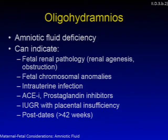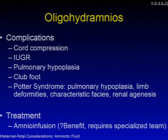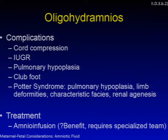Oligohydramnios is an amniotic fluid deficiency that can indicate fetal renal pathology such as renal agenesis or obstruction, fetal chromosomal abnormalities, intrauterine infections, use of ACE inhibitors or prostaglandin inhibitors, IUGR with placental insufficiency, or post-dates pregnancy greater than 42 weeks. Complications of oligohydramnios include cord compression, IUGR, pulmonary hypoplasia, club foot, and Potter syndrome — a constellation of pulmonary hypoplasia, limb deformities, characteristic facies, and renal agenesis. Amniotic fluid infusion may be used as treatment but is of questionable benefit.